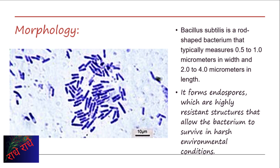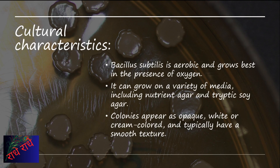Bacillus subtilis is a rod-shaped bacterium with a width of 0.5 to 1.0 micrometers and a length of 2.0 to 4.0 micrometers. Its ability to form endospores serves as an adaptation to survive in harsh environments, providing a high level of resistance. It is a gram-positive, rod-shaped bacterium belonging to the genus Bacillus.